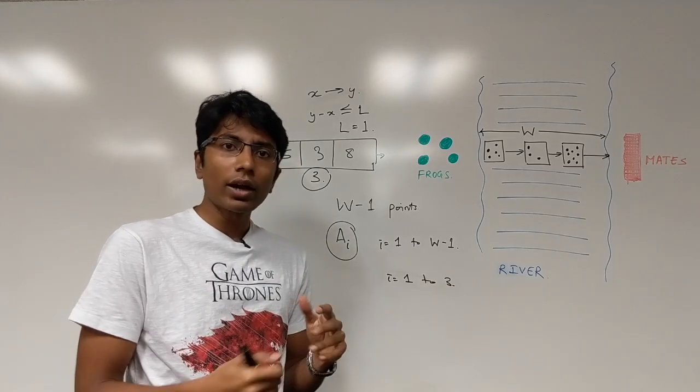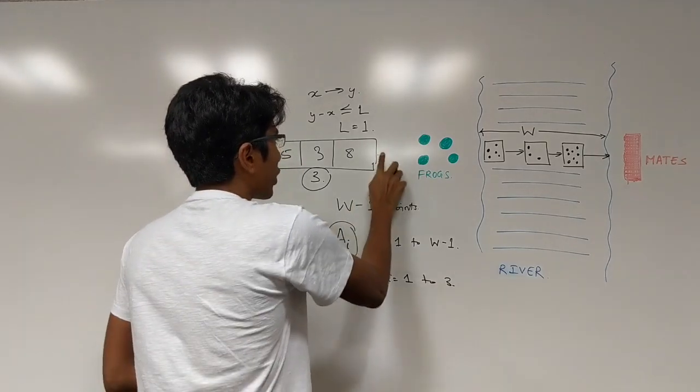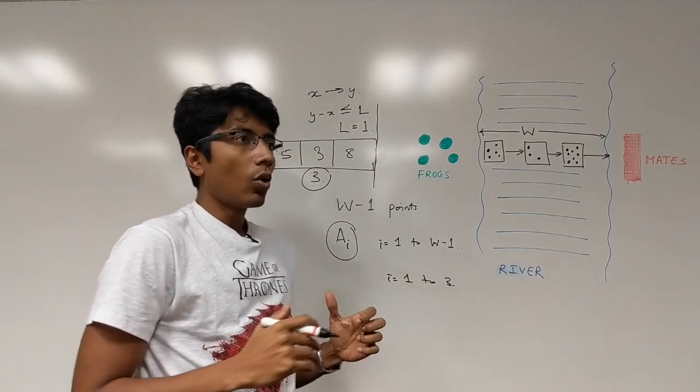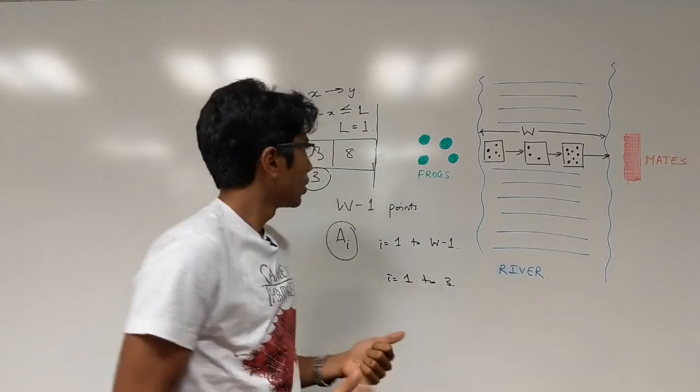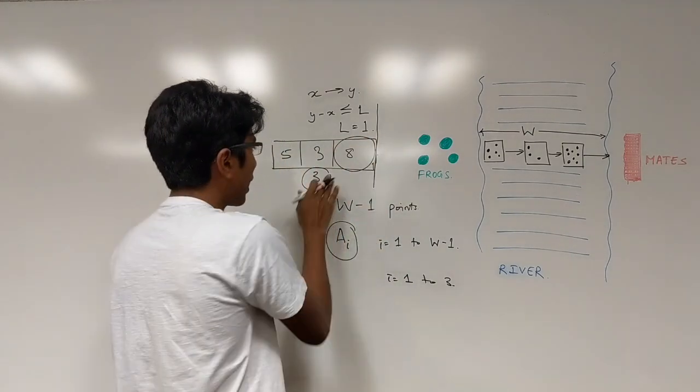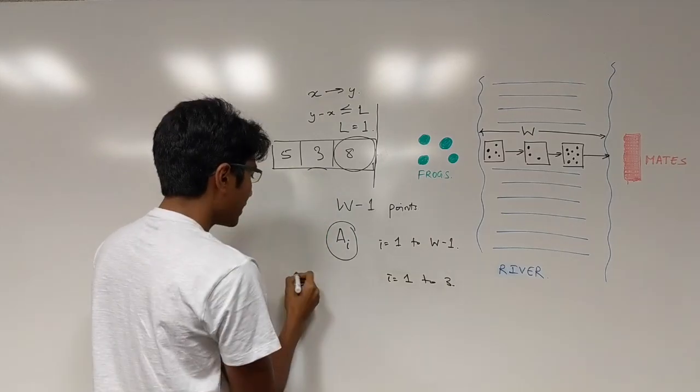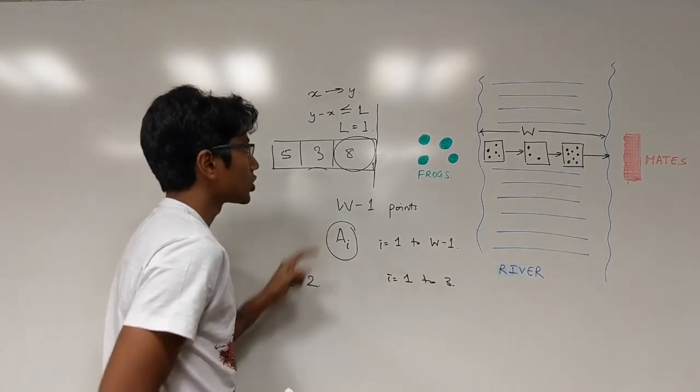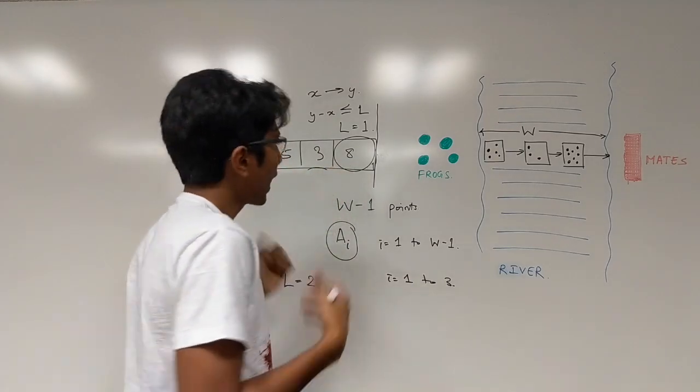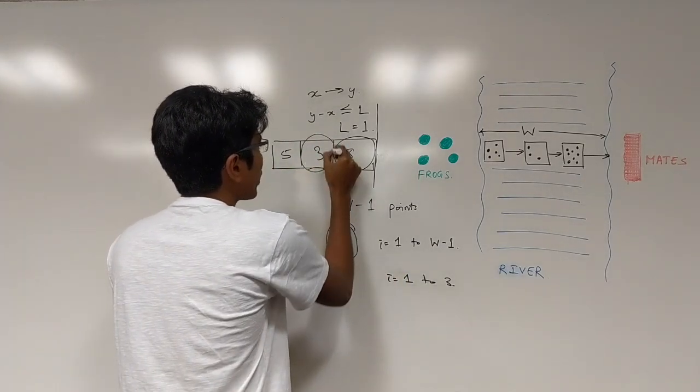That's one simple way to look at it. The other way to look at it is if you're on this point, if you're from the other side of the bank, who are the people who can reach you? One is this point. So I'm taking L backwards. Let's say L is equal to 2 now. So these guys can reach you.